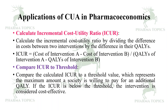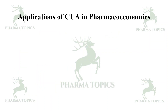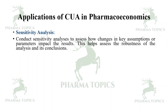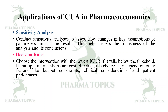The threshold represents the maximum amount a society is willing to pay for an additional QALY. If the ICUR is below the threshold, the intervention is considered cost-effective. Conduct sensitivity analysis to assess how changes in key assumptions or parameters impact the results, helping assess the robustness of the analysis. Decision rule: choose the intervention with the lowest ICUR if it falls below the threshold.